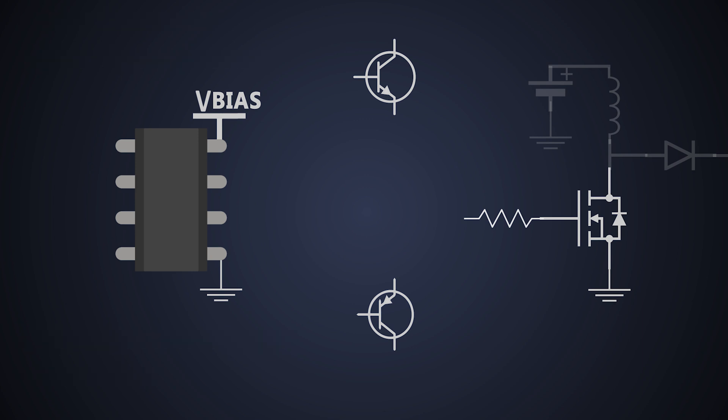We can use a totem pole circuit where BJT is used as an emitter follower. Let's see how it solves our problem.